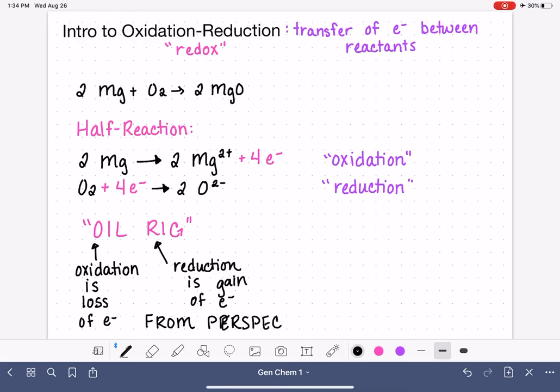This is one of the things that confuses a lot of students when we talk about losing electrons versus gaining electrons. It really depends on what perspective we're taking. So if we're looking from the perspective of the reactants, specifically, if we're looking at this from the perspective of magnesium, the magnesium reactant, is it losing electrons or is it gaining electrons?